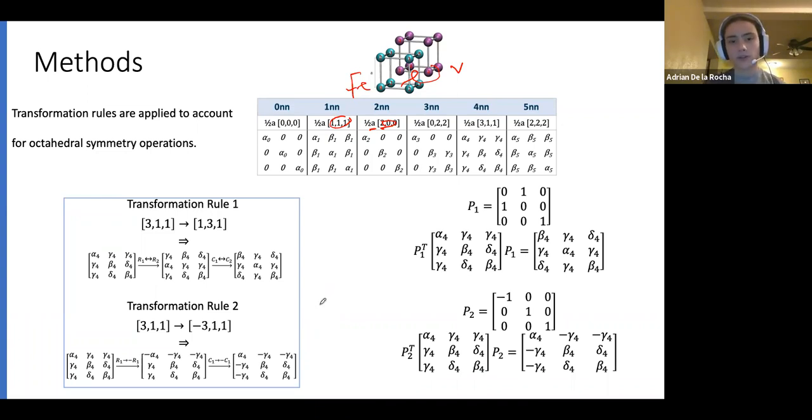To account for different geometries that the same type of nearest neighbors might have, we apply two transformation rules equivalent to octahedral symmetry operations. The first one is for permutation matrices. The second one is for reflection. Switching around two values of the position vector of j causes the row and column corresponding to those positions to switch. If we change the sign of one component of the vector, we must change the sign of the corresponding row and column. This can also be solved with rotation matrices, shown on the right.